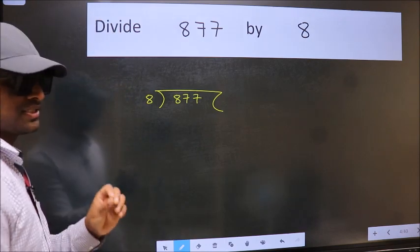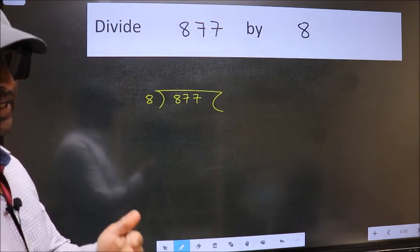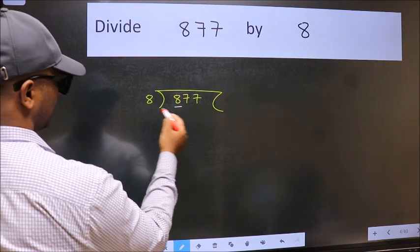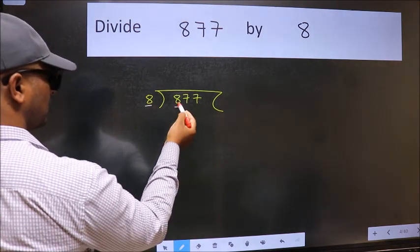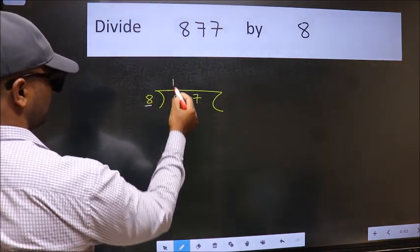This is your step 1. Next. Here we have 8 and here 8. When do we get 8 in 8 table? 8 once is 8.